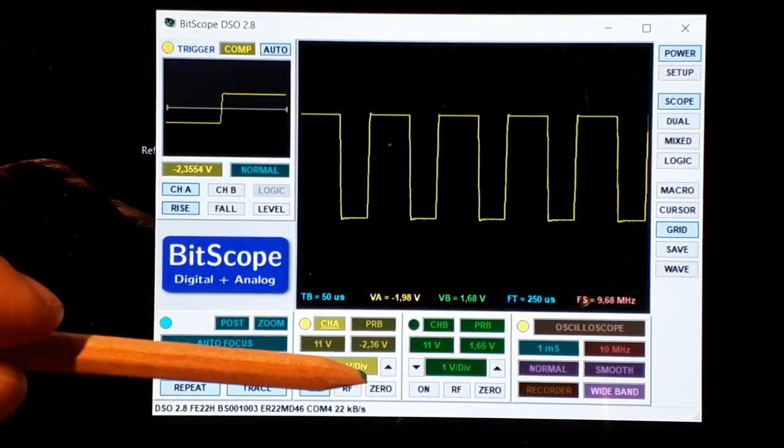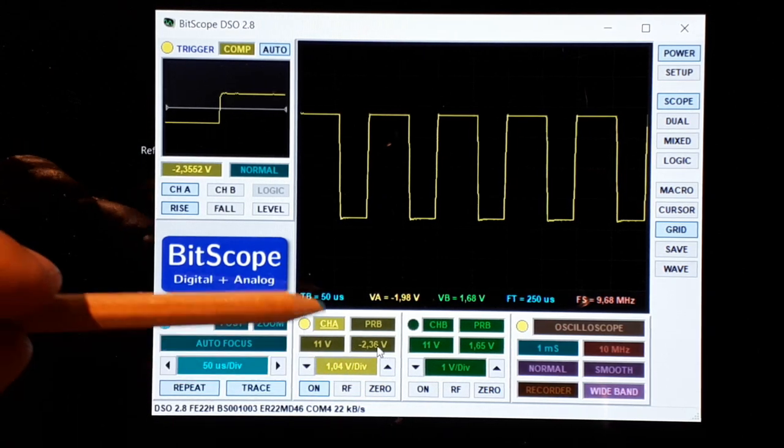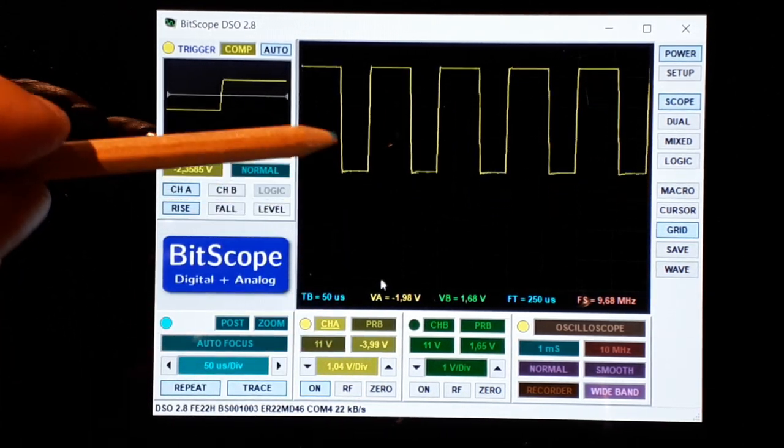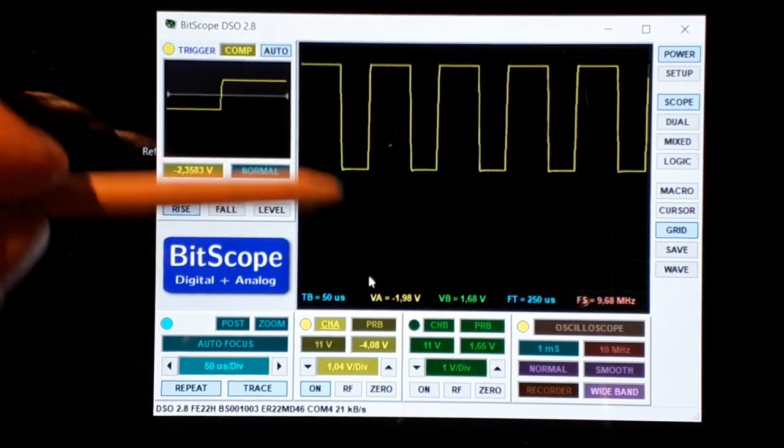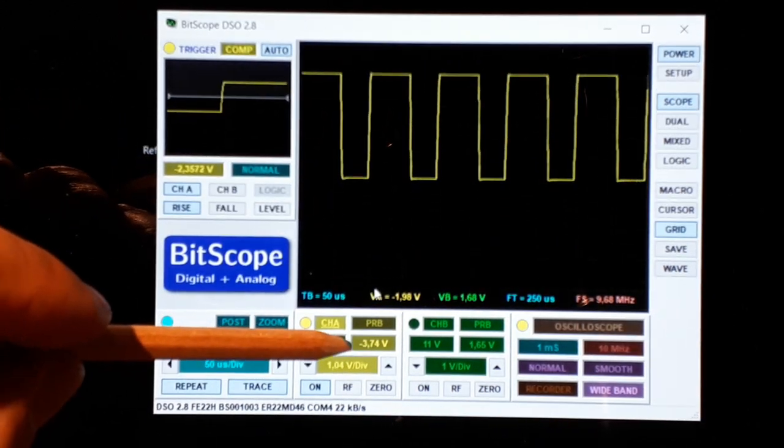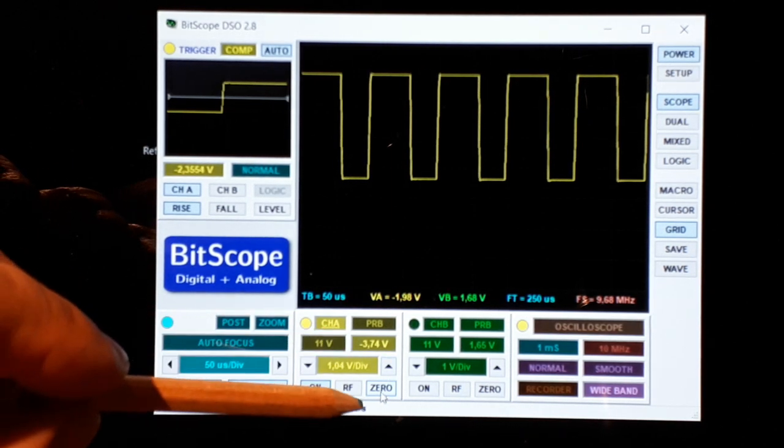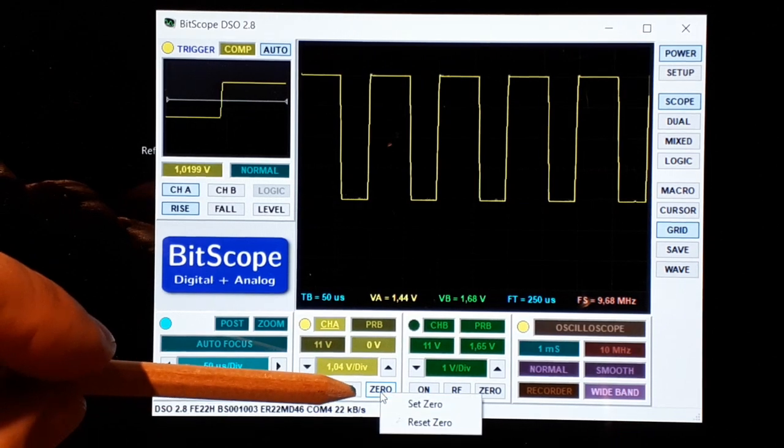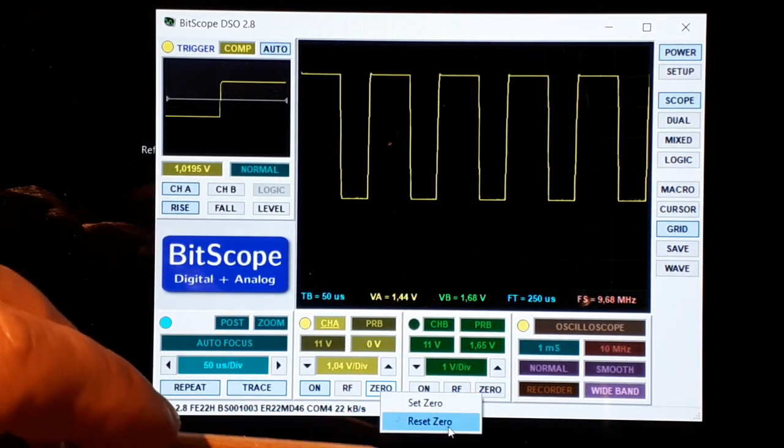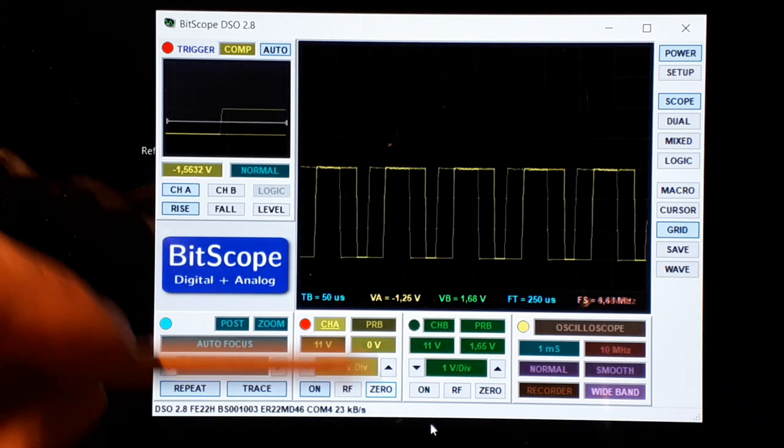You could change that there, you could change the offset here just clicking and dragging up and down. You could click and drag the function and this is the offset. You could put the offset to zero just clicking here.